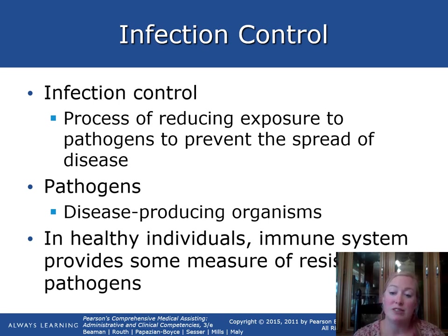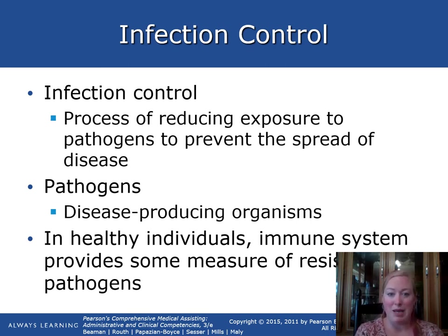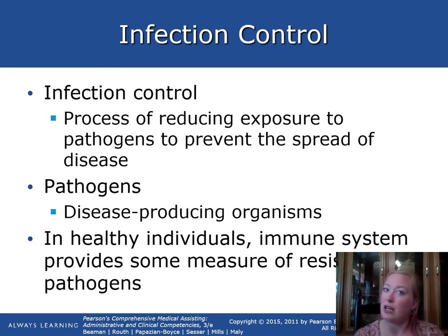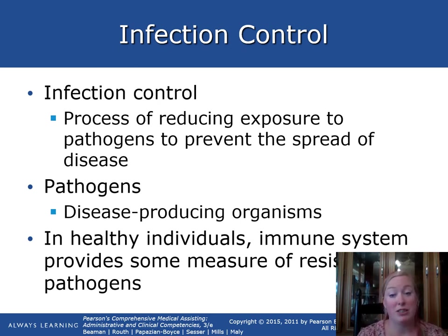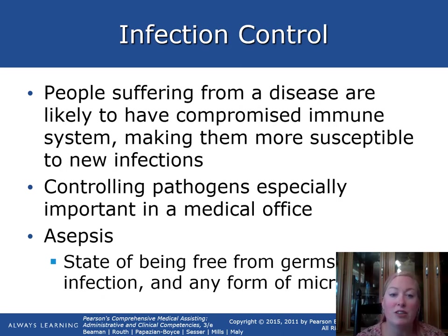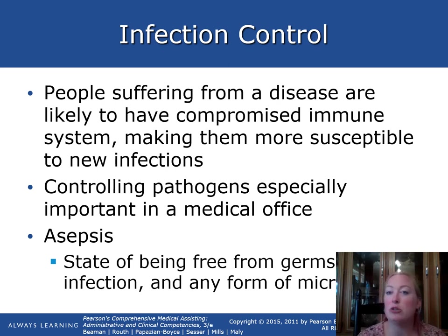In healthy individuals, our immune system provides some resistance against pathogens. For instance, if you've had chickenpox, you're not likely to get it a second time because your body recognizes it. With COVID-19, if you hadn't been previously exposed, you have a bigger reaction. People with a compromised immune system — such as those with emphysema, COPD, heart disease, or diabetes — are more susceptible to new infections.